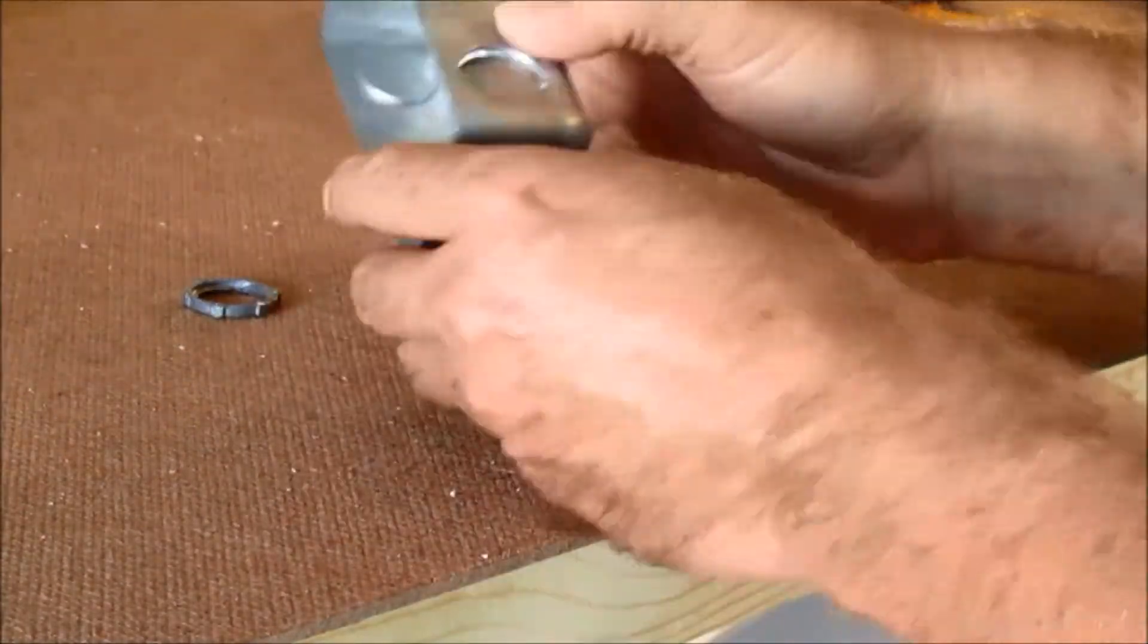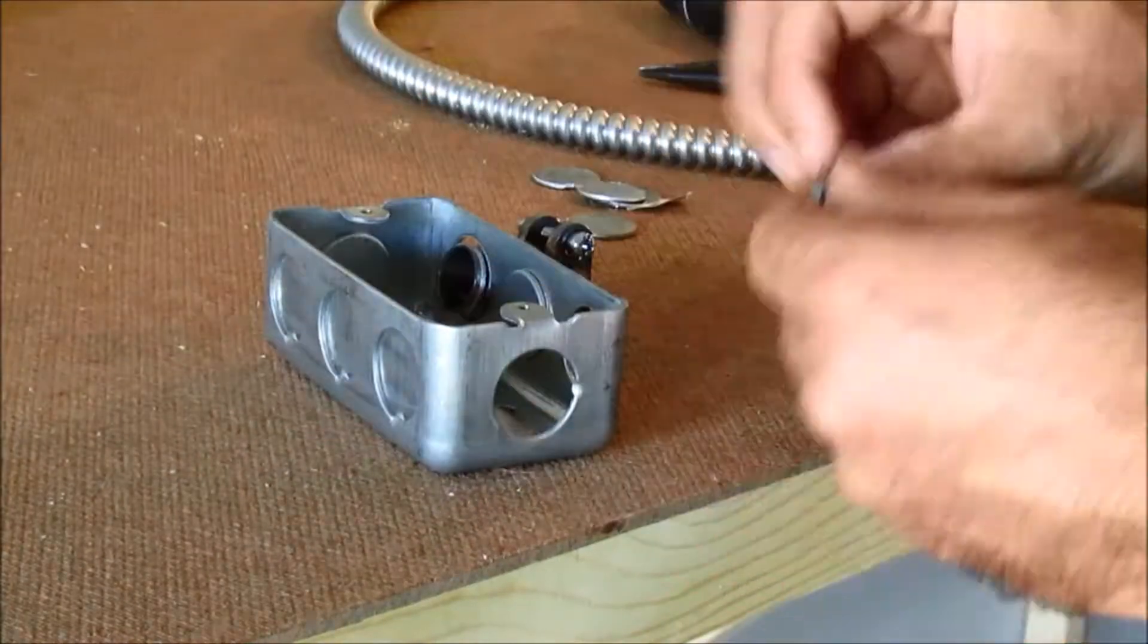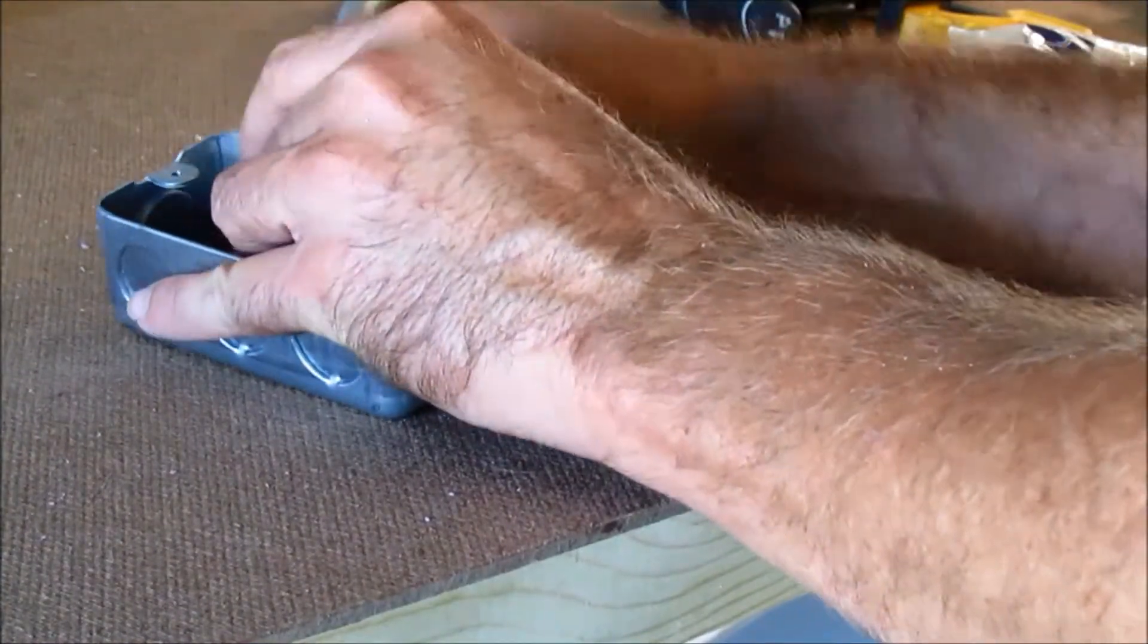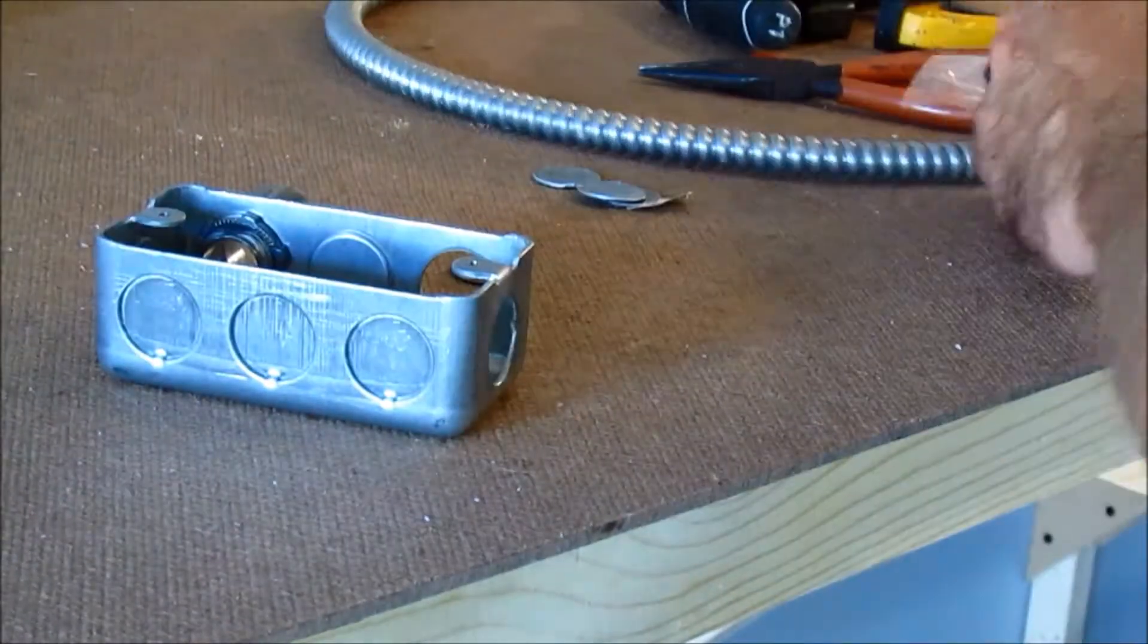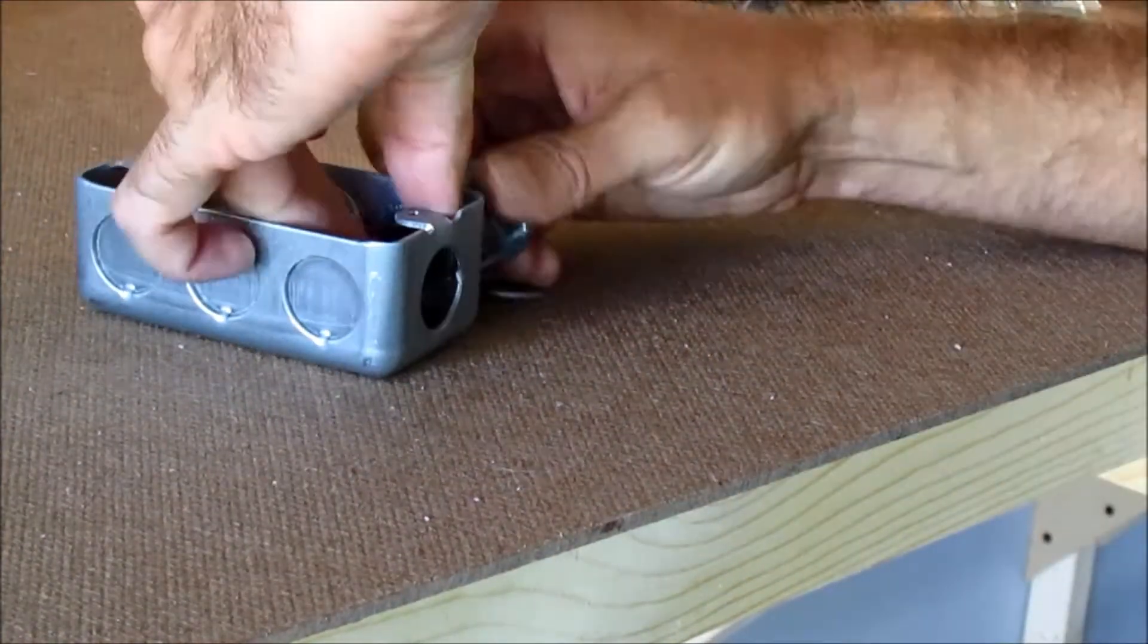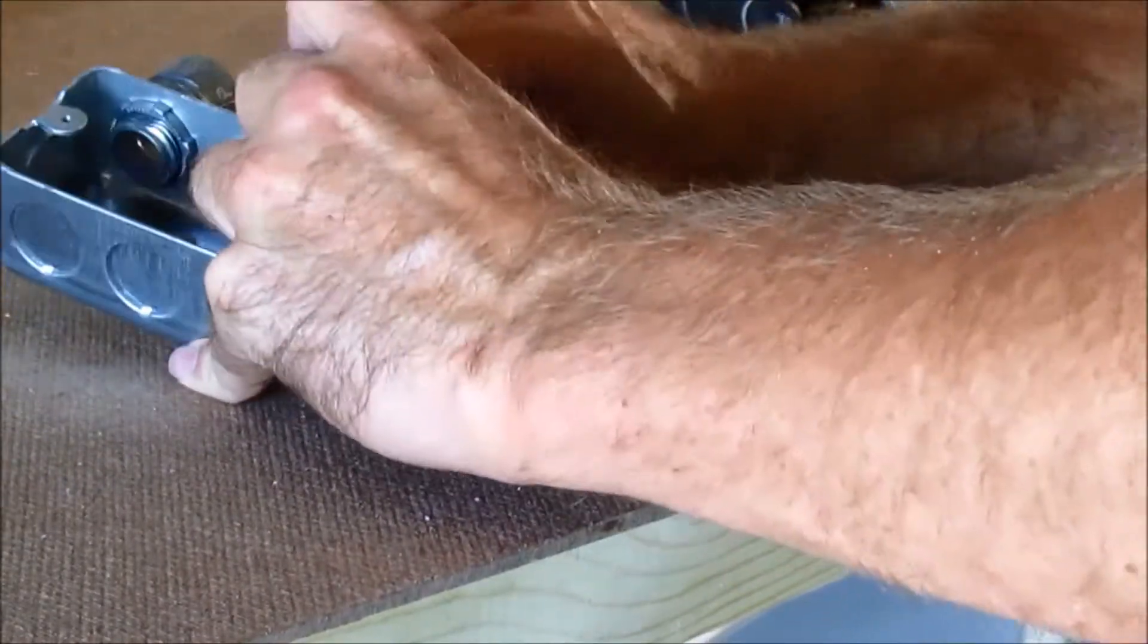So here I've got the junction box and I'm just knocking out the slugs where I want the conduit to come into the junction box. As I mentioned earlier, this is the wrong size squeeze clamps. These are the one half inch. Again, if you were using one half inch conduit it would work, but since I'm using three-eighths inch conduit, I had to go back and get the three-eighths inch clamps.